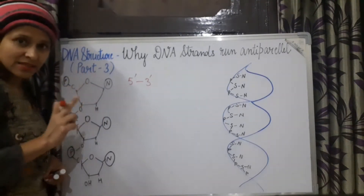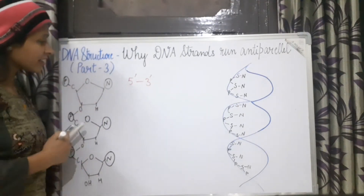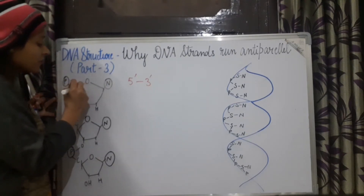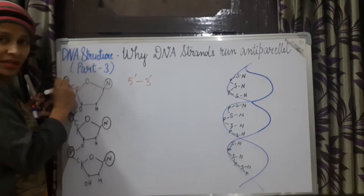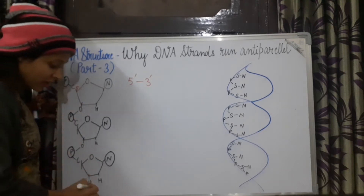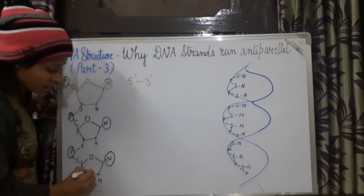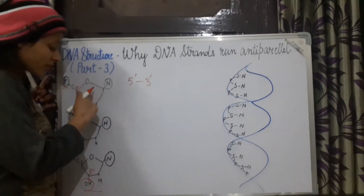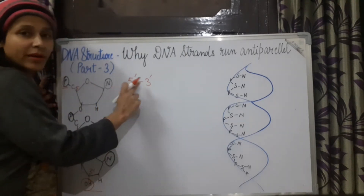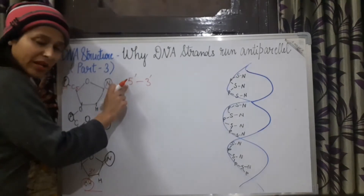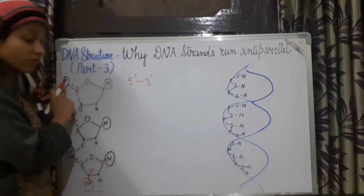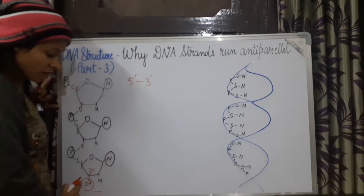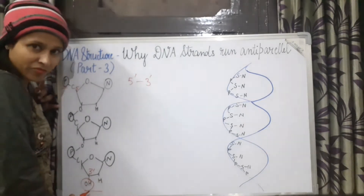We have discussed and revised this in part 2. The strand is called 5' because the first nucleotide's 5th carbon reactive group is free, and the last nucleotide's 3rd carbon reactive group is free. So the DNA strand is called 5' to 3' — the 5th carbon reactive group is free at one end and the 3rd carbon hydroxyl group is free at the other.